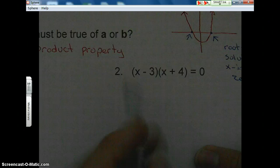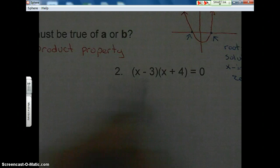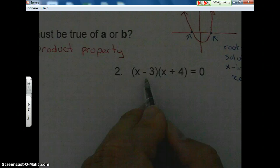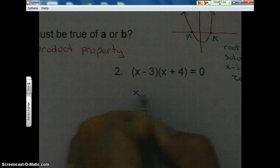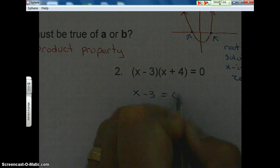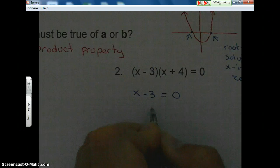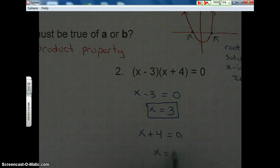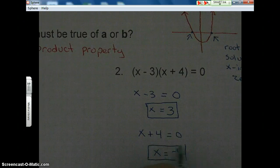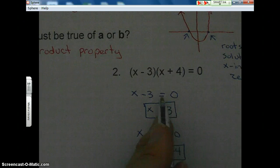Remember the steps. We're going to use the zero product property, and we're going to set each factor equal to zero. So our first factor. Okay, so solving this one, we have a solution of three. Take our second factor. Solve for x. Our second solution is negative four. These are also known as the roots.